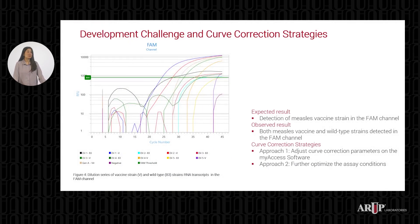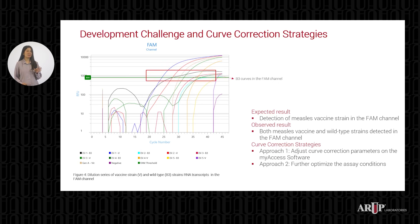This plot shows a dilution series of vaccine and wild-type strain RNA transcripts in the FAM channel. We should only be seeing vaccine strain signal in the FAM channel; however, we also see these flatter-looking curves around the baseline — these are B3 curves. This cross-reactivity is likely due to the MEVA probe having a single nucleotide mismatch with the wild-type strain, leading to some degree of non-specific binding. To resolve this issue, we identified two main approaches: first, adjusting curve correction parameters on MyAxis software, and second, further optimizing the assay conditions.